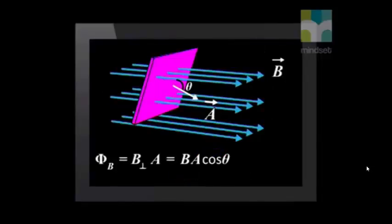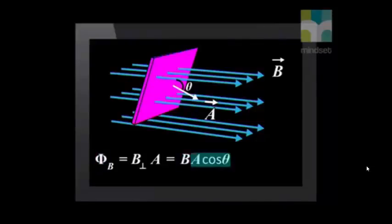Then we looked at the magnetic flux through a surface. Magnetic flux is the product of the component of the magnetic field normal to the surface and the surface area. Magnetic flux, phi, is equal to the product of the magnetic field, B, and the area, A cos theta, where theta is the angle between B and the normal to the surface.